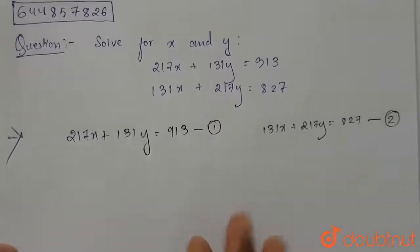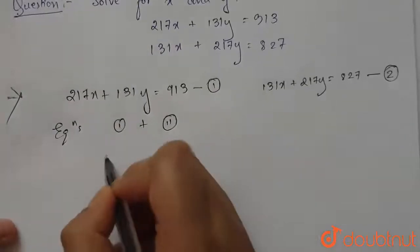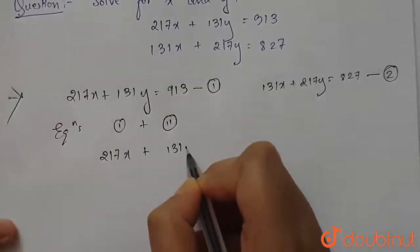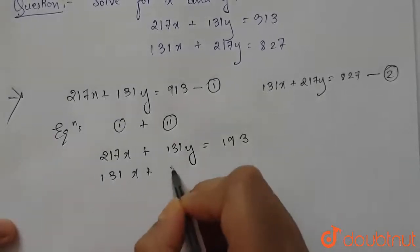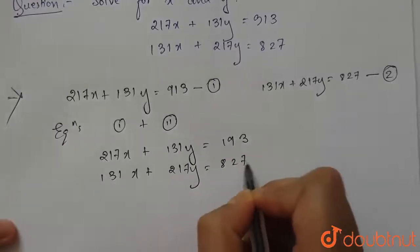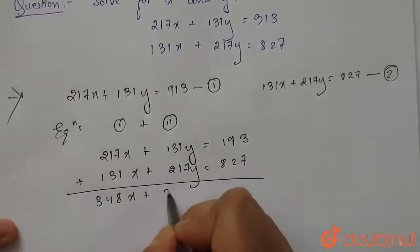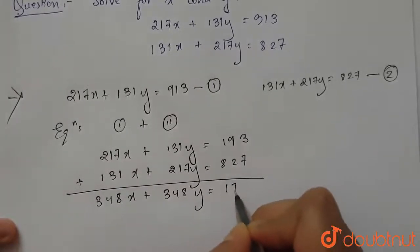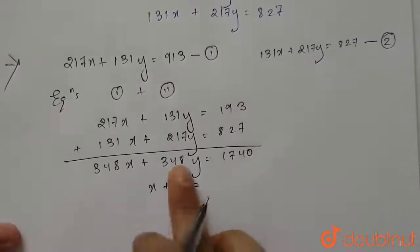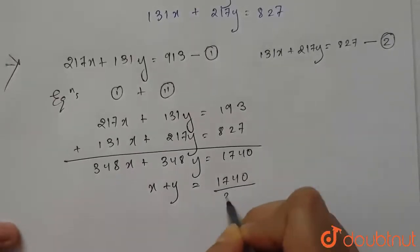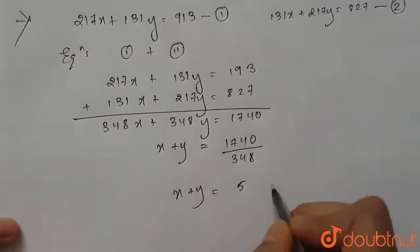Now let's add equations 1 and 2. After adding, we get 348x + 348y = 1740. Dividing both sides by 348, we get x + y = 5. Let this be equation number 3.